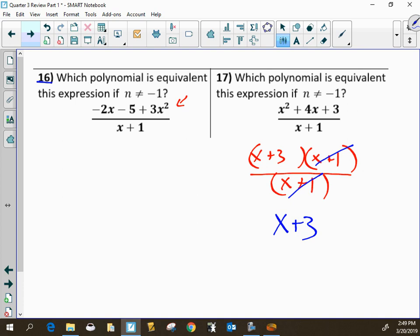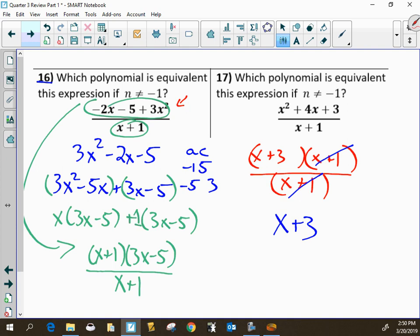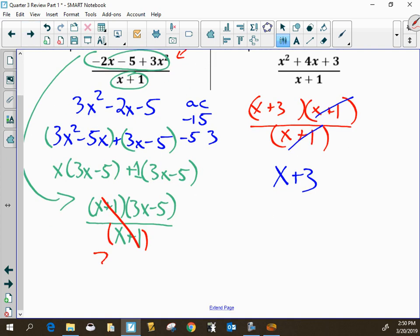Now you do number 16 the same way. But first I'm going to rewrite this as 3x squared minus 2x minus 5. So this is what I'm trying to factor on the top. And so I use a method called ac. Some people use xbox. Some people use slide and divide. But what are two numbers that multiply together to give you negative 15 that add up to negative 2? And those two numbers are negative 5 and positive 3. So this will be 3x squared minus 5x plus 3x minus 5. And then I factor by grouping. And that will be x times 3x minus 5 plus 1 times 3x minus 5. And so the top part of this factors as x plus 1 times 3x minus 5. But the whole fraction as it originally was, was over x plus 1. So the x plus 1's cancel. And your final answer is 3x minus 5.